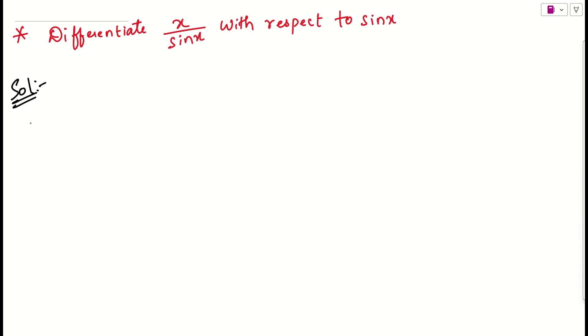First of all, what I will suggest is simply let us take the first function as u. What is u? First function x by sin x. And let us take the second function as v. v is sin x. We need to differentiate the first function with respect to the second function.